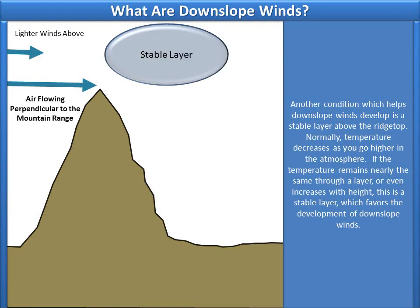Another condition which helps downslope winds develop is a stable layer above the ridgetop. Normally, temperature decreases as you go higher in the atmosphere. If the temperature remains nearly the same through a layer, or even increases with height, this is a stable layer, which favors the development of downslope winds.